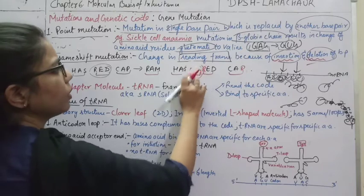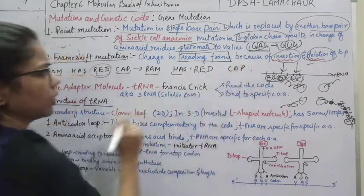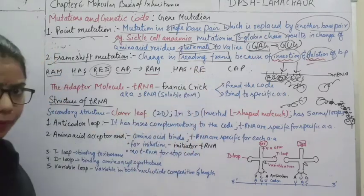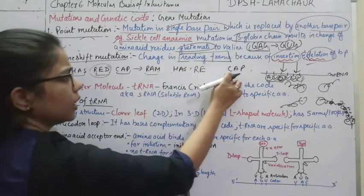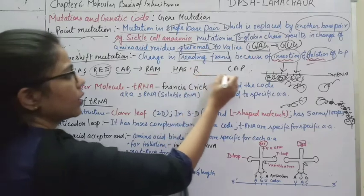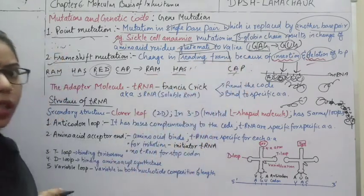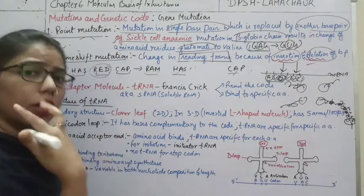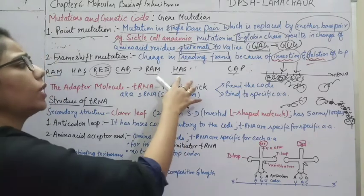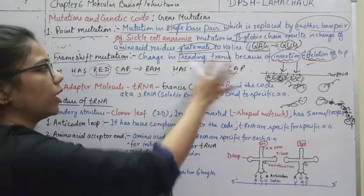Similarly for deletion: 'Ram has red cap.' If I delete 'D', I read 'Ram has REC then AP.' If I delete 'E', I get 'Ram has RCA.' If I delete 'R' as well, the reading becomes 'Ram has cap.' So by deleting one or two nucleotides the frame is disturbed, but by deleting three nucleotides — one full codon — the remaining frame is preserved, just with that amino acid removed.